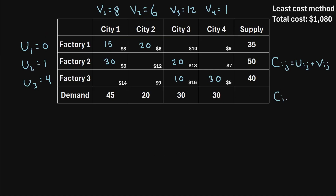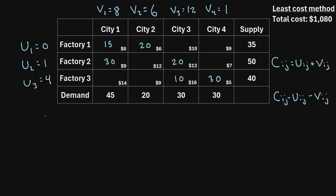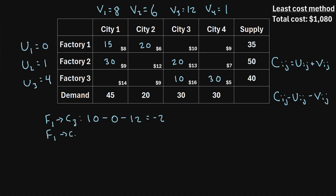Now we use the formula Cij minus ui minus vj, calculating this for each of the unallocated cells. For example, from factory 1 to city 3, we didn't ship any goods. The unit shipping cost is 10, so we have 10 minus 0 minus 12, which equals negative 2. Then for factory 1 to city 4, the unit shipping cost is 9, so 9 minus 0 minus 1 equals 8. We repeat this calculation for each of the remaining unallocated cells.